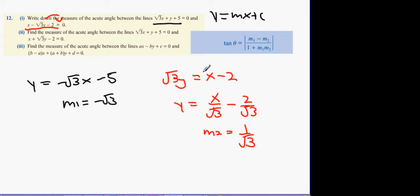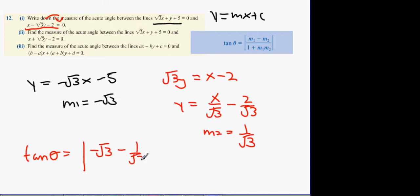We enter them into the formula: tan θ = (m1 minus m2) divided by (1 plus m1 times m2). That gives tan θ = (minus root 3 minus 1 over root 3) divided by (1 plus (minus root 3) times (1 over root 3)).